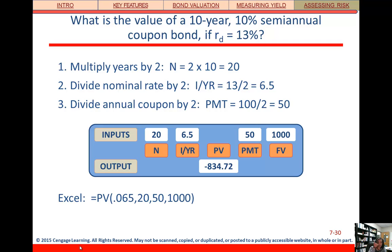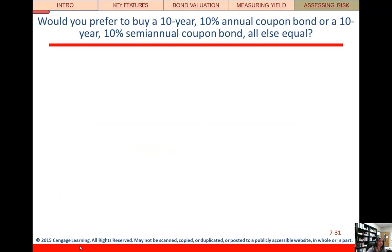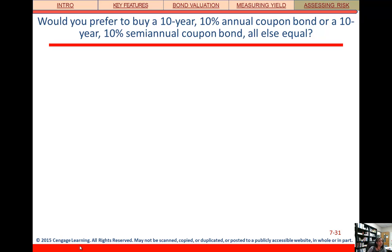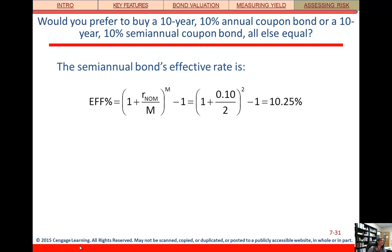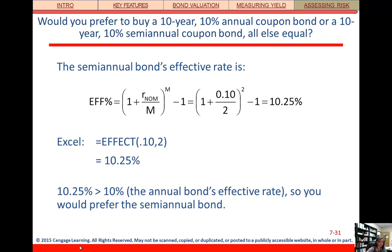Would you prefer a 10-year 10% annual bond or a 10-year 10% semi-annual bond? You want interest as often as possible. The effective annual rate on the semi-annual bond is 10.25%, which is higher than 10%, so that's the one you want.